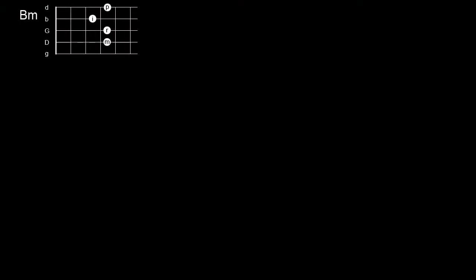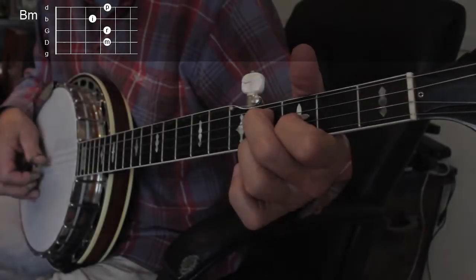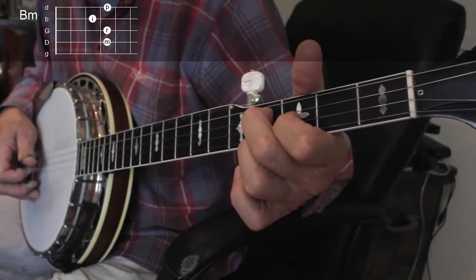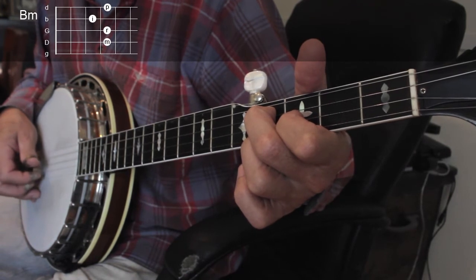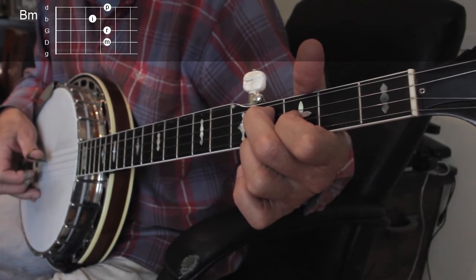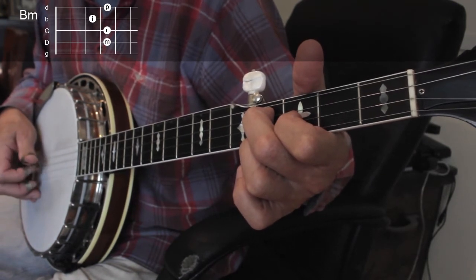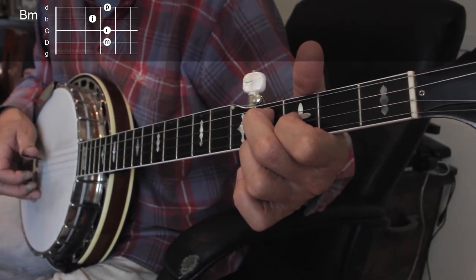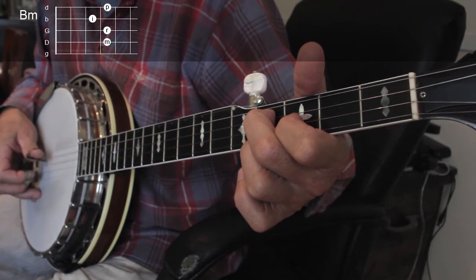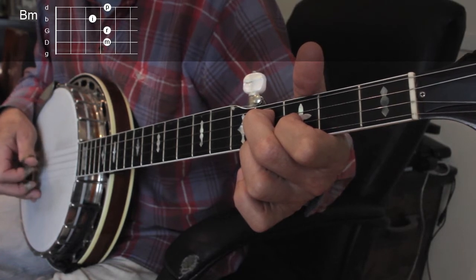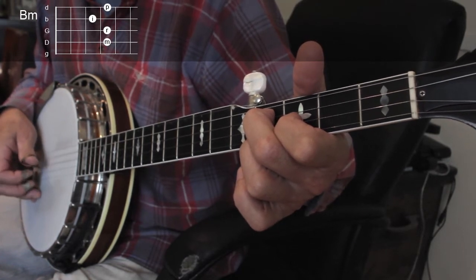Here's a B minor chord. Again we have to decide if the G note of the fifth string is going to give us the sound that we want. It makes an unusual sounding roll here, which is great if we want it. If we don't want it, then avoid the fifth string with your roll.